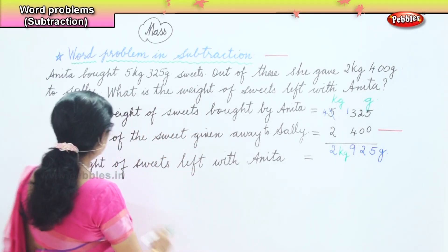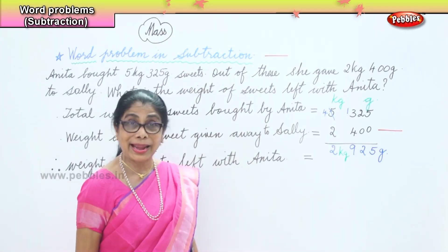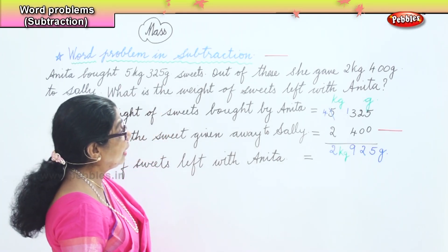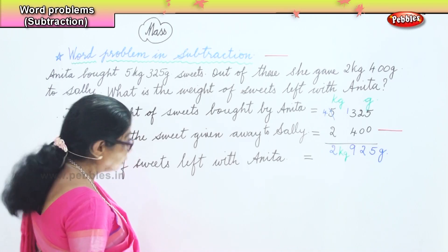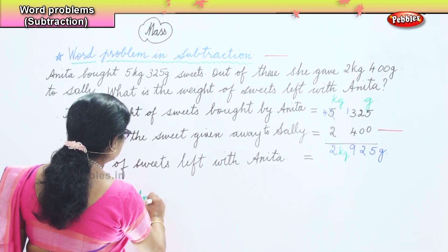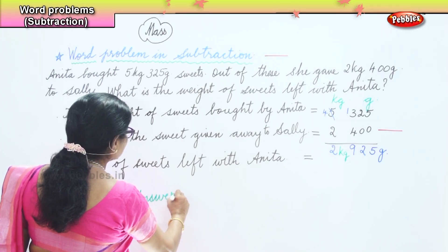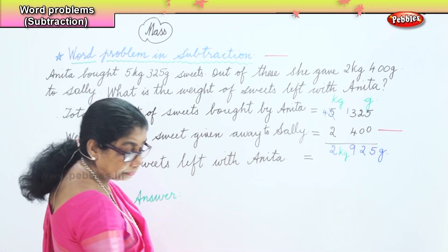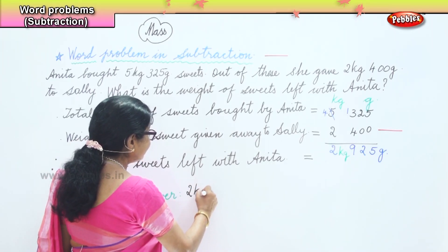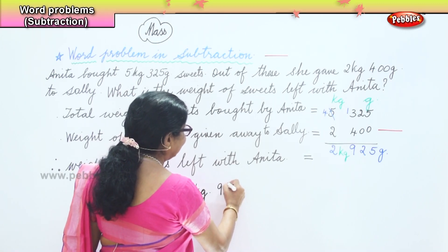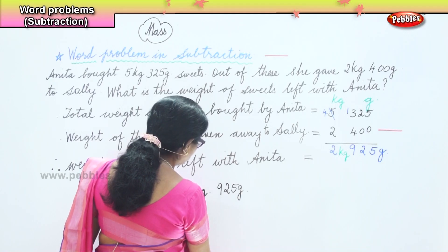So what is the weight of sweets left with Anita? 2 kilogram 925 grams — that's our answer. The answer is 2 kilogram 925 grams of sweets.